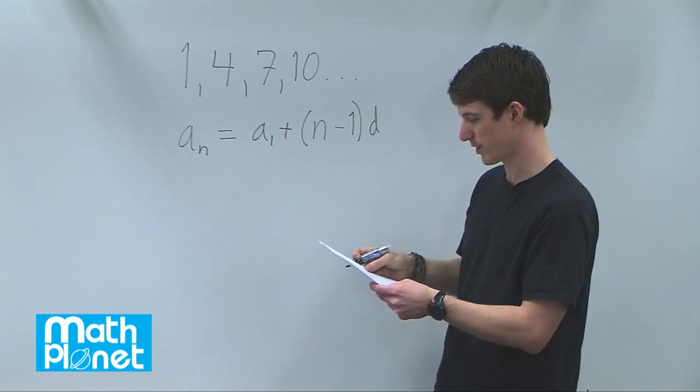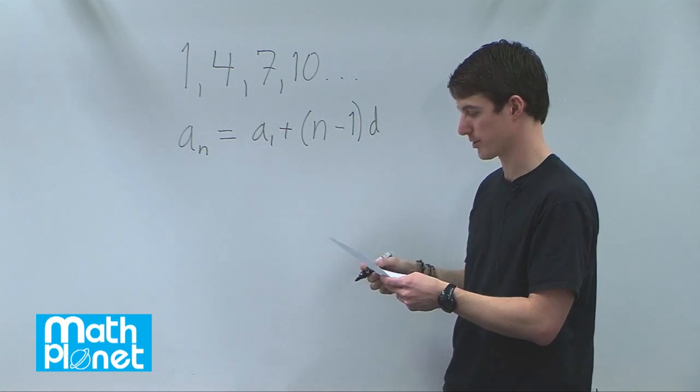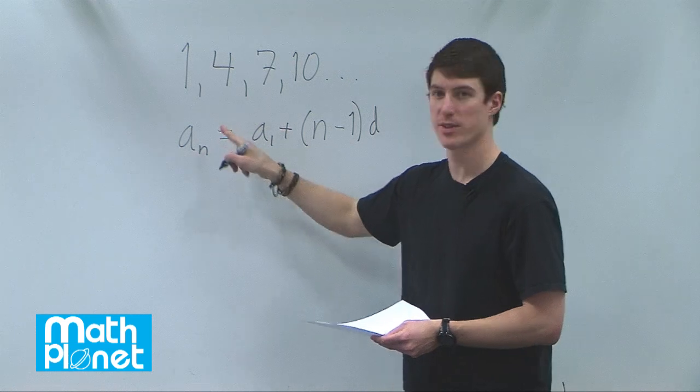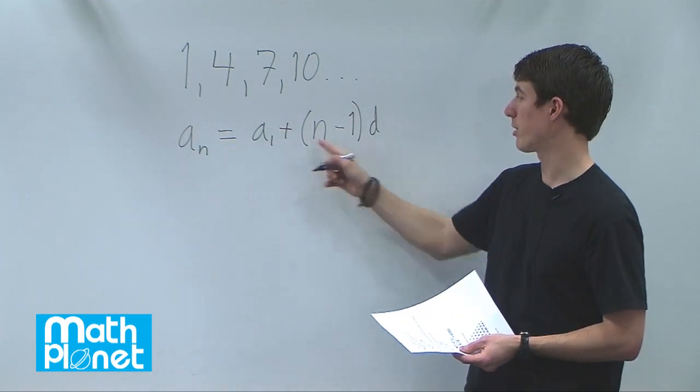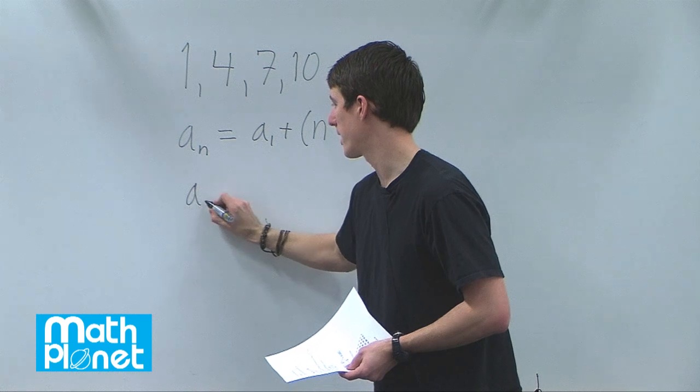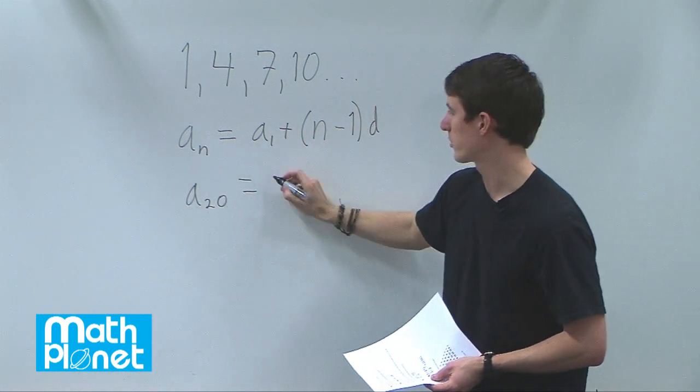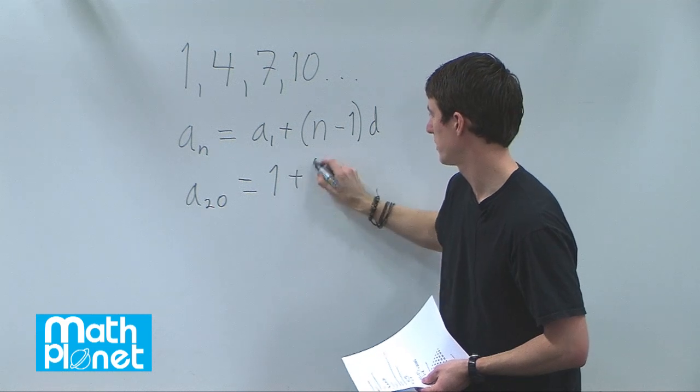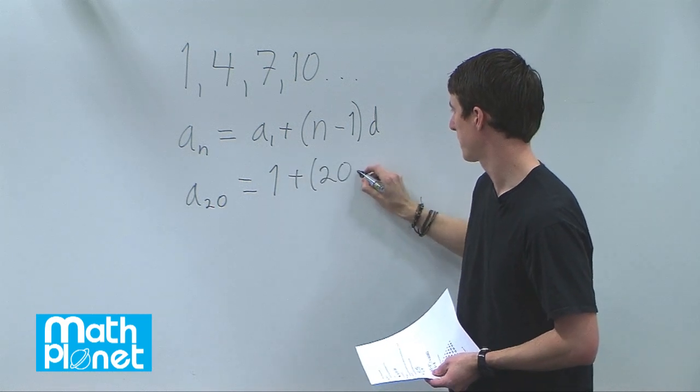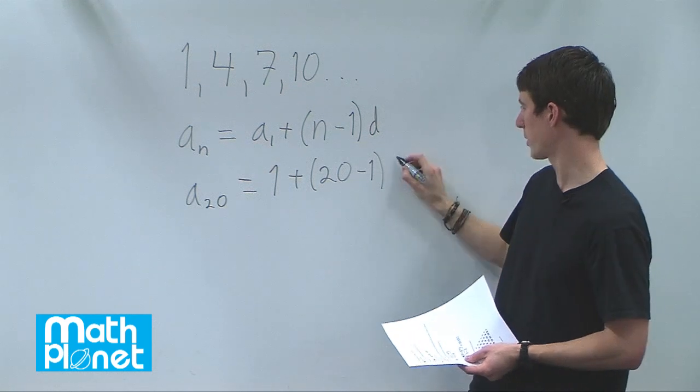Great. So if we want to see what the 20th term is, we can find it using this by just plugging in the values that we know. So say we want to find a20, then we just plug in what we have here. a1 is 1, plus, we've chosen 20, minus 1 times this difference, 3,